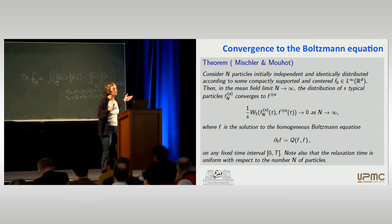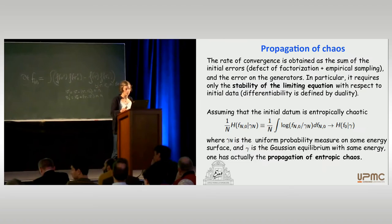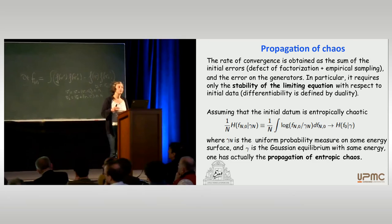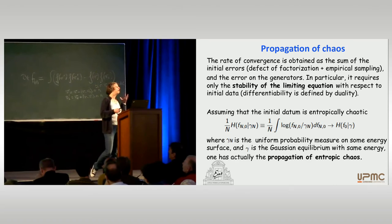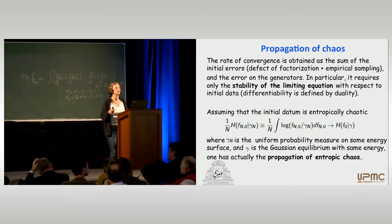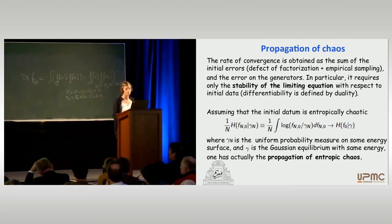In the proof of this theorem, the rate of convergence is obtained as a sum of the initial errors — at time zero you are not exactly factorized because of this problem of overlapping — and then you can estimate also the errors in the generator. This is really like a weak-strong uniqueness principle: you use the stability of the limiting equation with respect to initial data, and then compare the generator of the two dynamics. You can prove that this convergence also holds in entropic sense. This means that the propagation of chaos is satisfied in a very strong sense — not true uniformly with respect to S, the number of the marginal, but still something very strong.